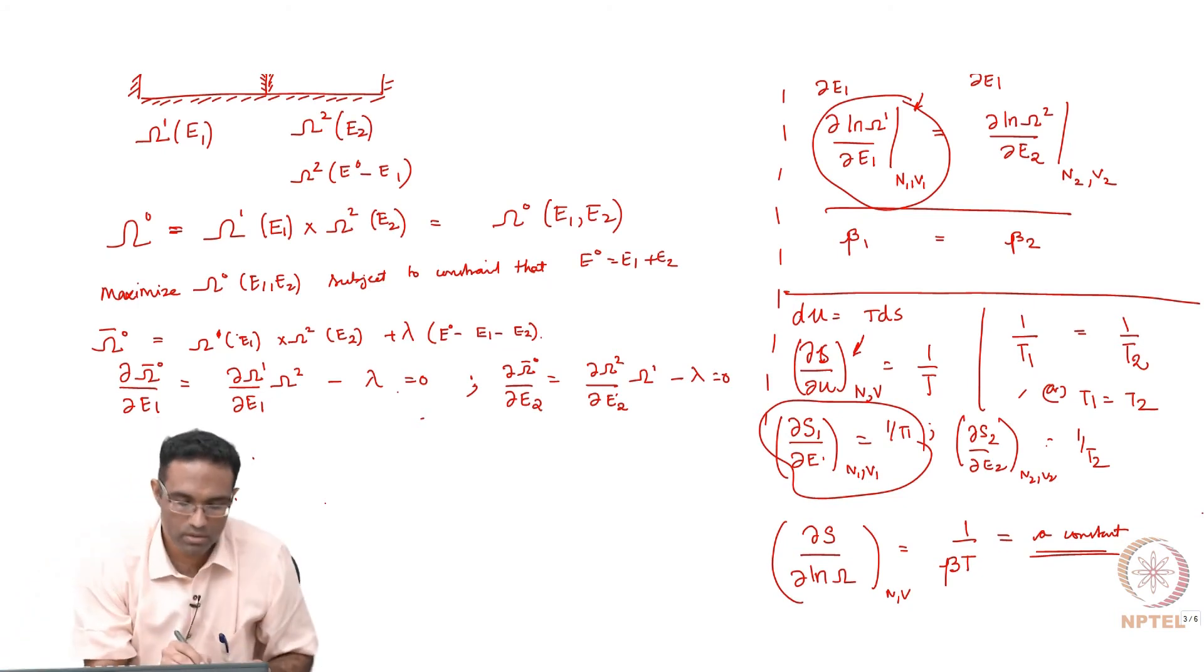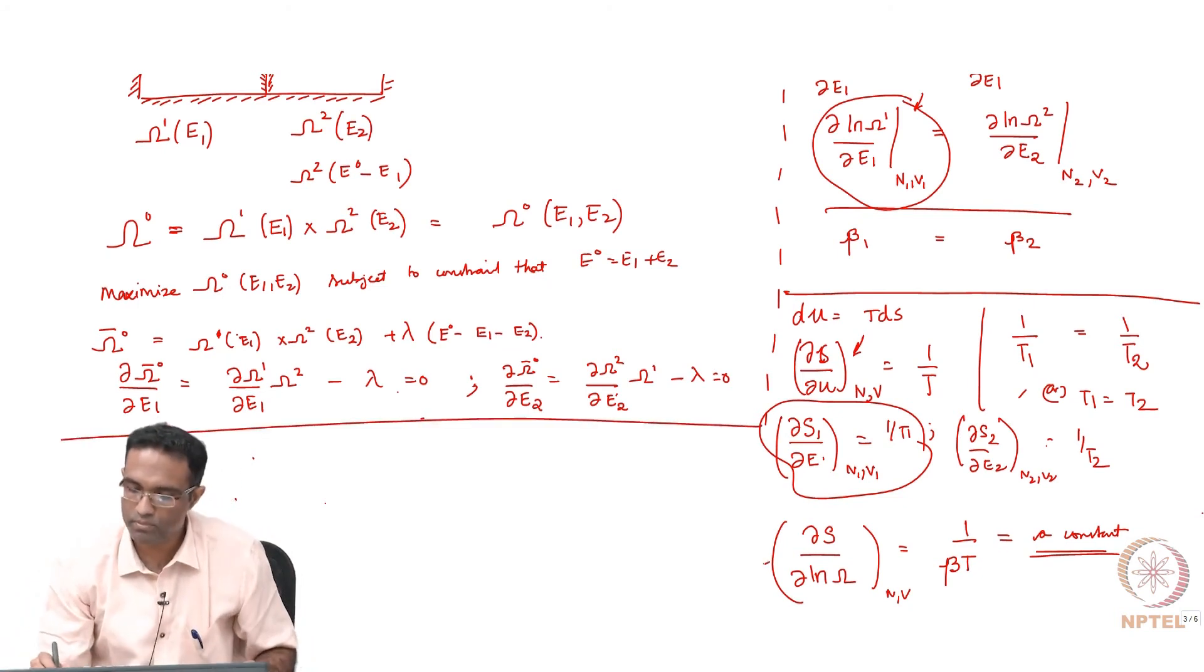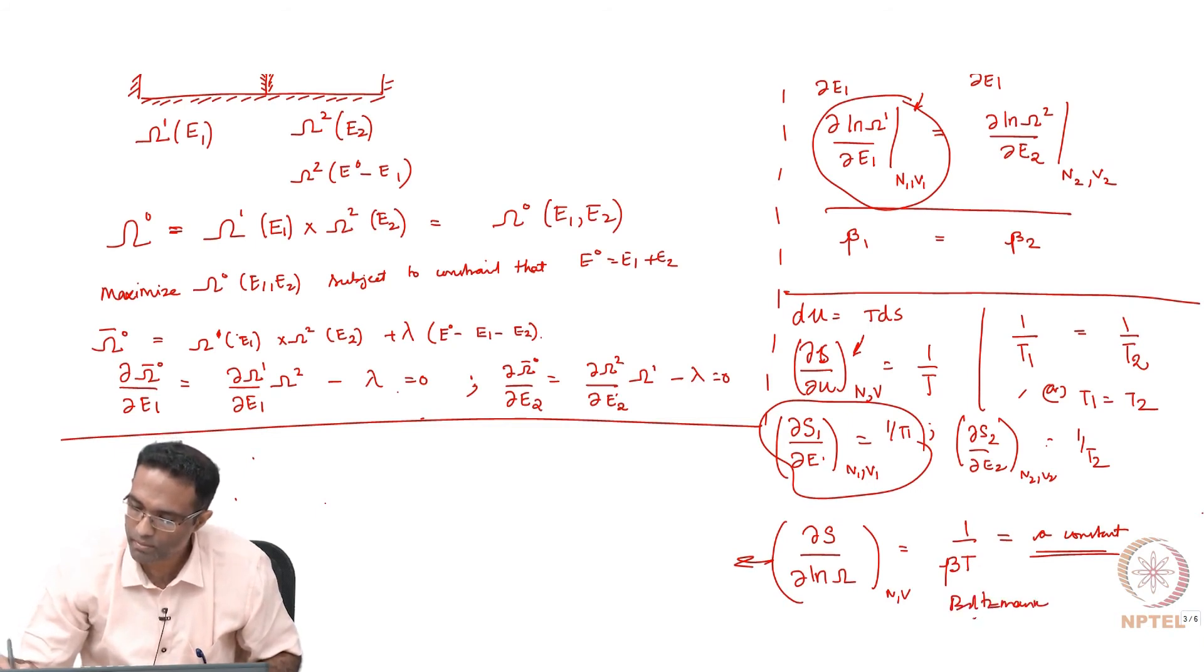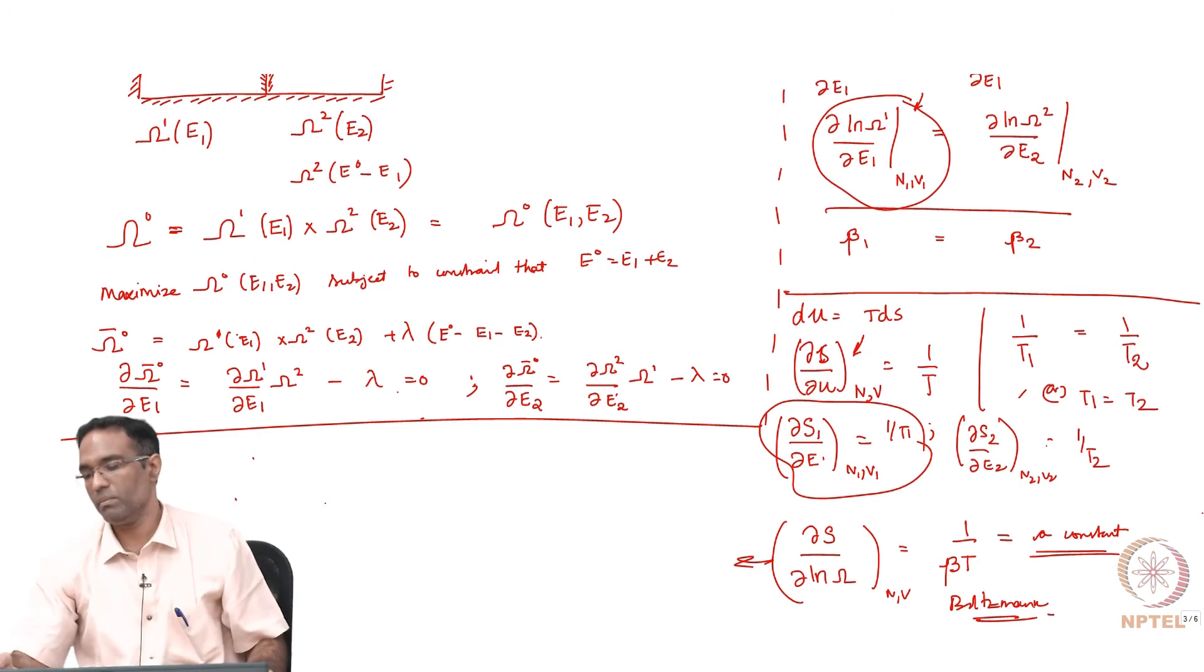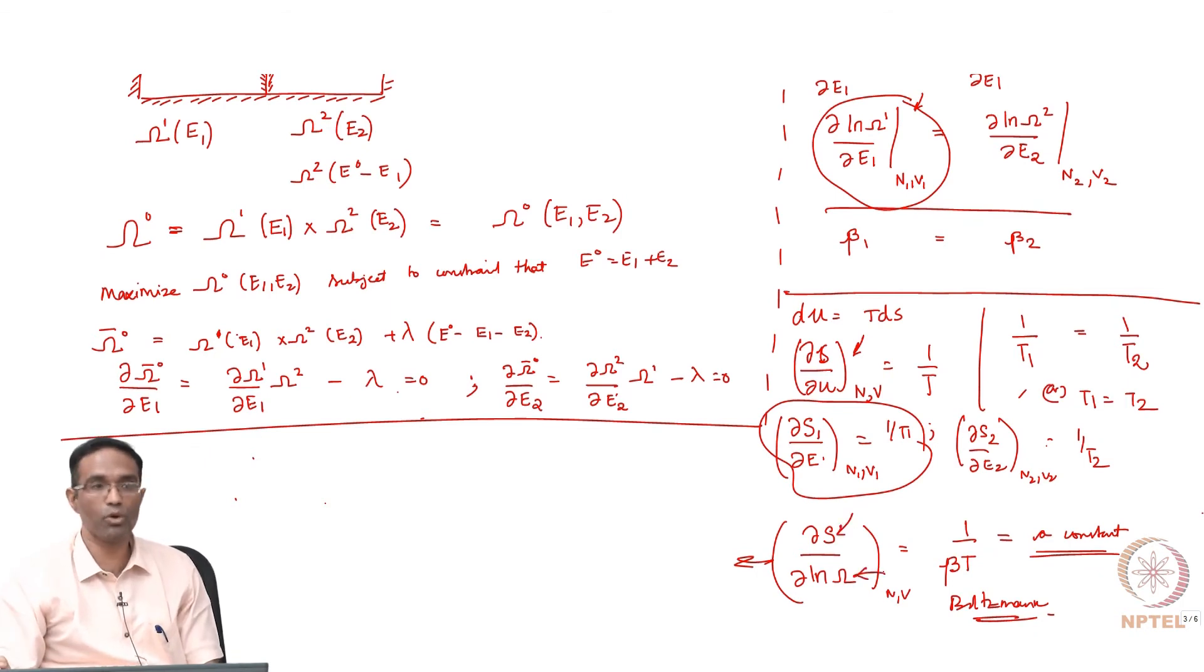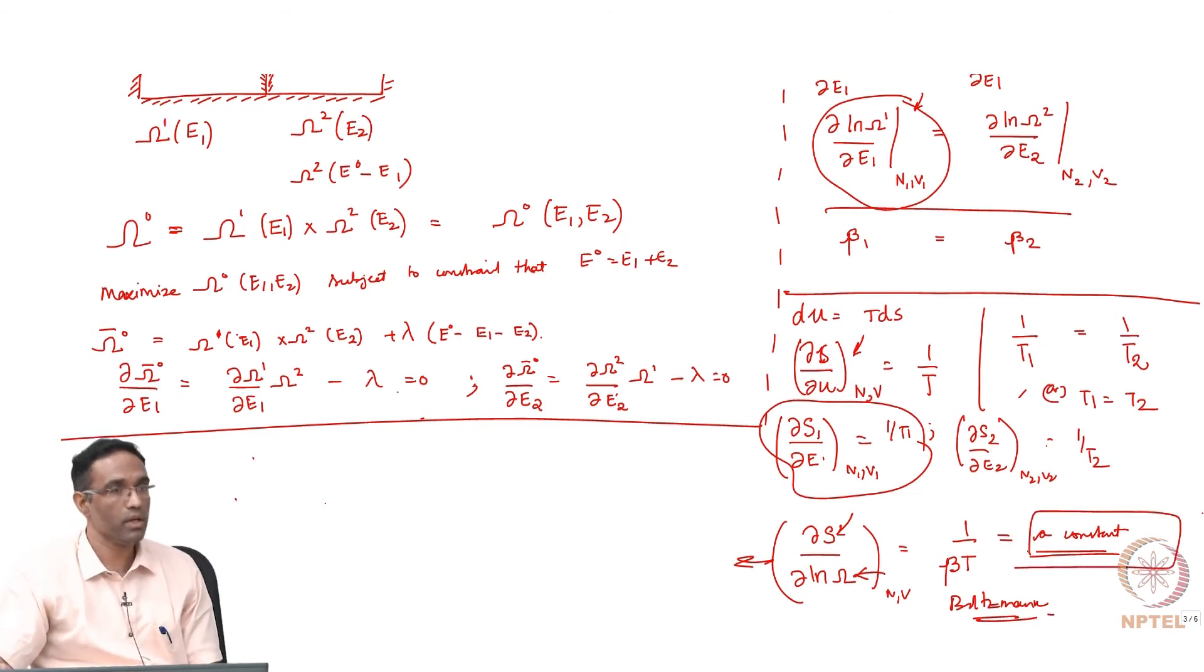What Boltzmann did was - this is where Boltzmann left it, this was written down by Boltzmann. He thought that since this approach is kind of connecting something at classical thermodynamics level and the microscopic nature of the system, this has to be some sort of a universal constant.